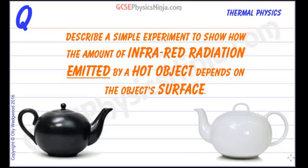So far we know that dark matte surfaces are good emitters of infrared radiation and that light shiny surfaces are poor emitters. They are actually good reflectors. So how could we show this experimentally?